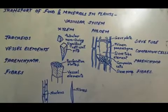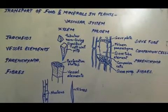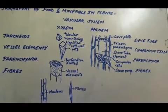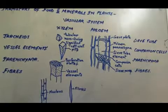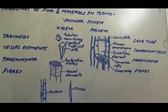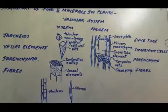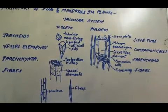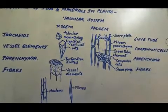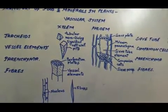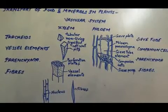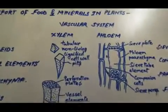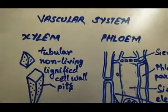Unlike animals, plants do not have a living connective tissue like blood to transport minerals and food to various parts of the body. Transportation in plants is carried out by a well-developed transportation system called the vascular system. It consists of two special types of tissues, namely the xylem and the phloem.